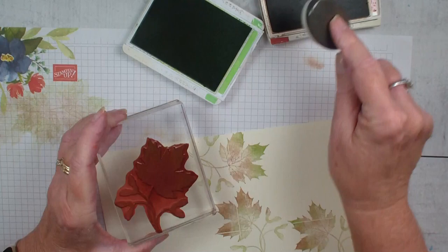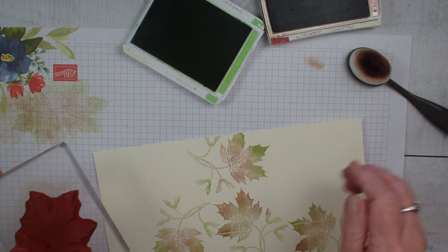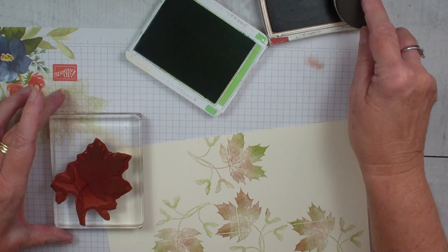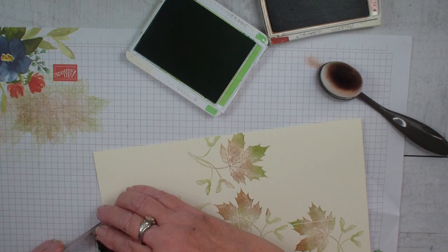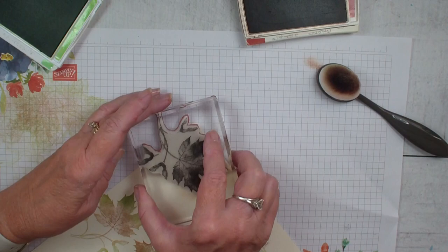Let's go ahead and get another one over here. Now, if you don't have the blending brushes, you could always use daubers stamp off again. I'm going to do one more here. But then I want to grab the four corners and I think I'm going to go with just straight Cajun Craze.